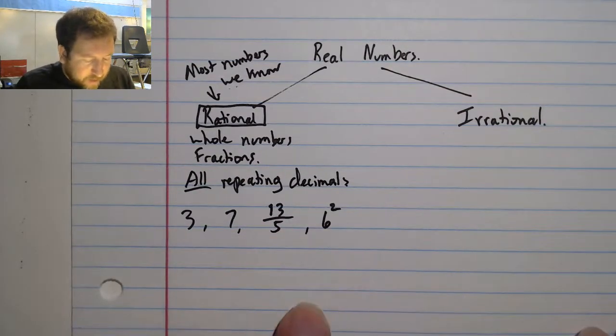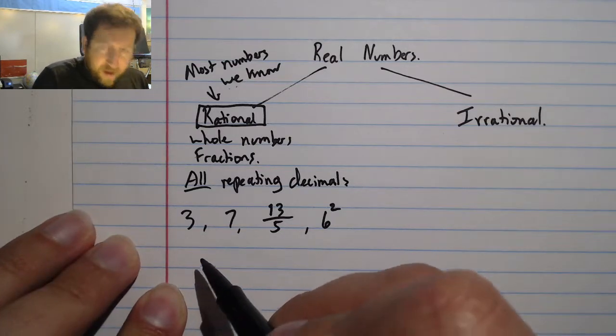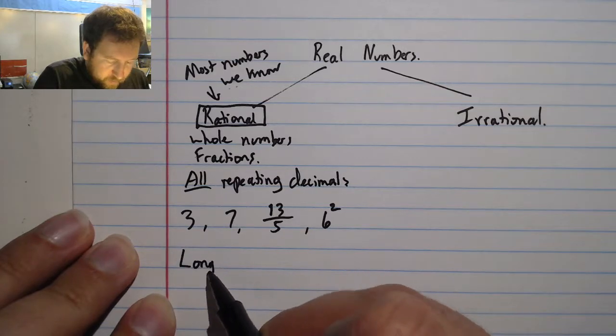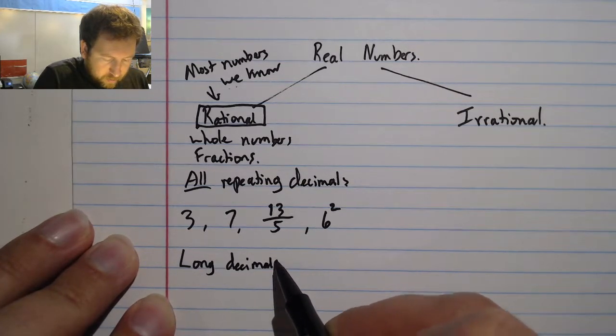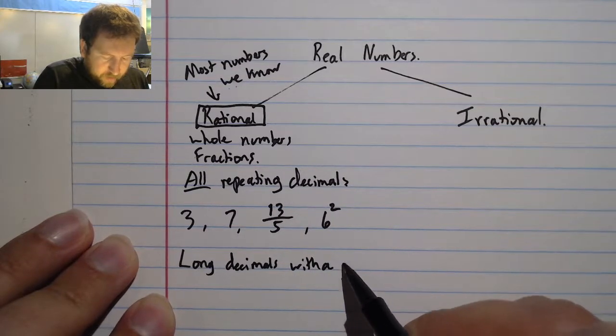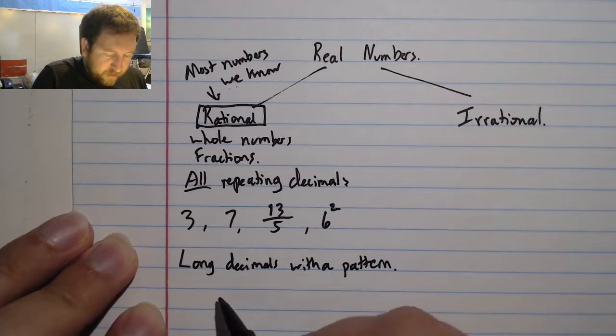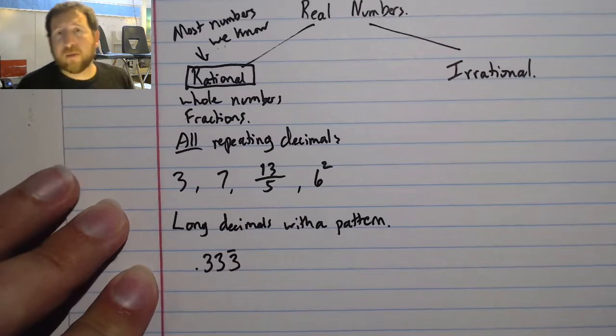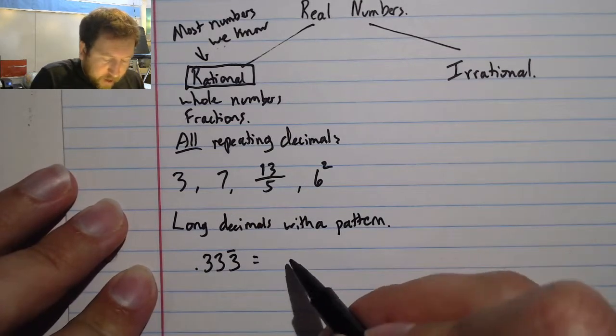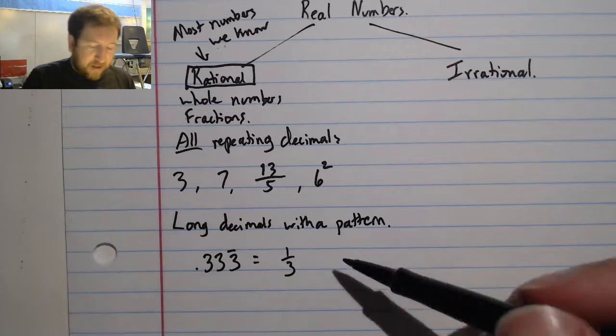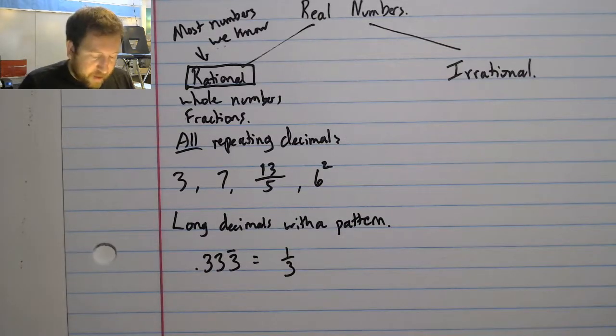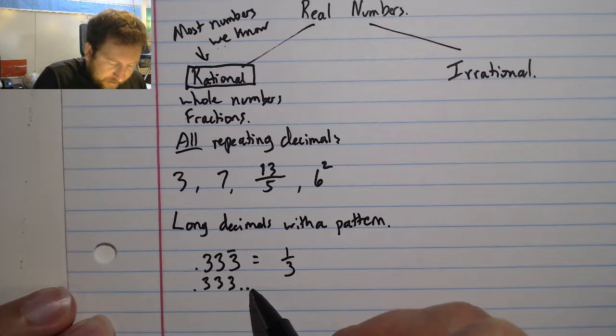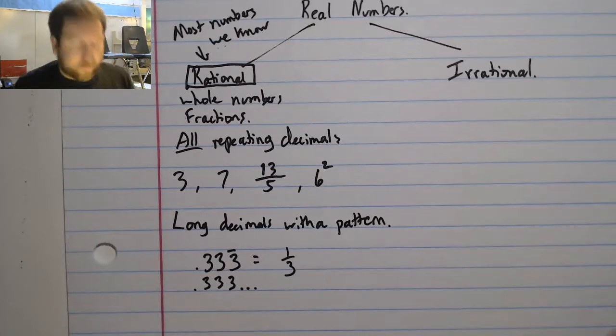However, when we start to get some kinds of long decimals, if there's a pattern they're still rational numbers. So long decimals with a pattern, for example, the number 0.333 repeating is a rational number because I can write this as 1/3, and that makes it a rational number.